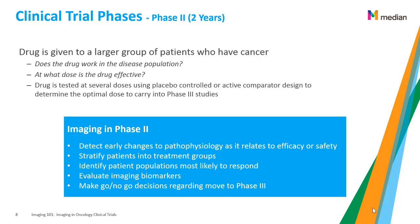In Phase 2, the drug is given to a larger group of patients who have cancer to answer the questions: Does the drug work in the disease population? At what dose is the drug effective? The drug is tested at several doses using placebo-controlled or active comparator design to determine the optimal dose to carry into Phase 3 studies. Imaging in Phase 2 is used to detect early changes to pathophysiology as it relates to efficacy or safety, stratify patients into treatment groups, identify patient populations most likely to respond, evaluate imaging biomarkers, and to make go/no-go decisions regarding the move to Phase 3.